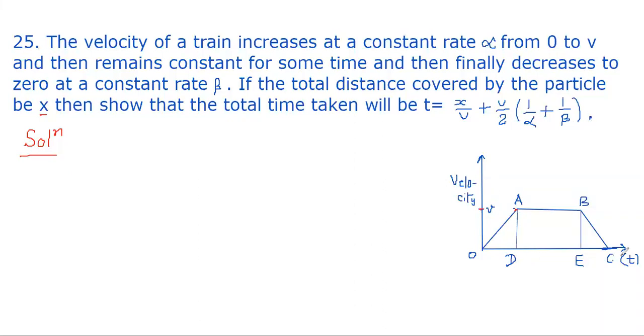Here the velocity-time graph is shown. During time OD, that is from O to A, acceleration is alpha. Then from A to B, the velocity is constant. Then from B to C, velocity decreases to zero.